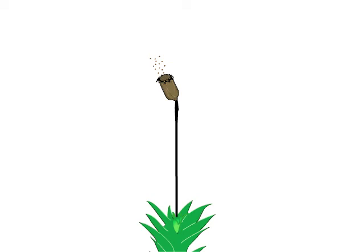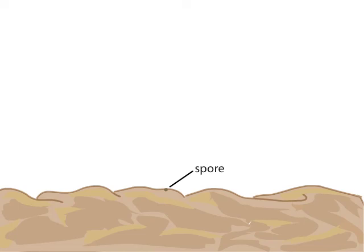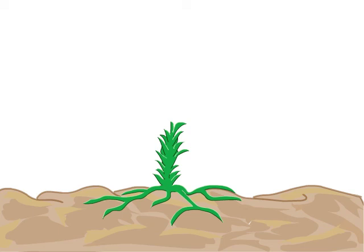A spore that lands on moist ground will germinate, producing a filamentous elongating structure called a protonema. This protonema gives rise to buds, which in turn develop into the next haploid gametophyte generation. The gametophytes in this generation will mate and continue the alternation of generations.